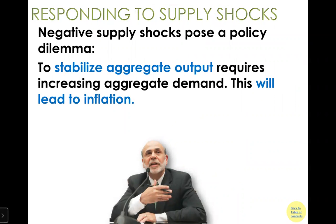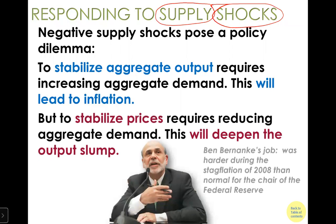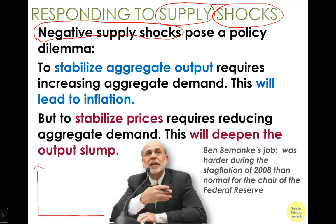Now let's see how the government is going to respond. This is particularly challenging when there is a supply shock or negative supply shock. So far we only talked about demand shocks. Now we want to look at what happens if there's a supply shock. If there is a negative supply shock, that's going to pose a policy dilemma. Let's draw a curve to understand what happens with a negative supply shock.